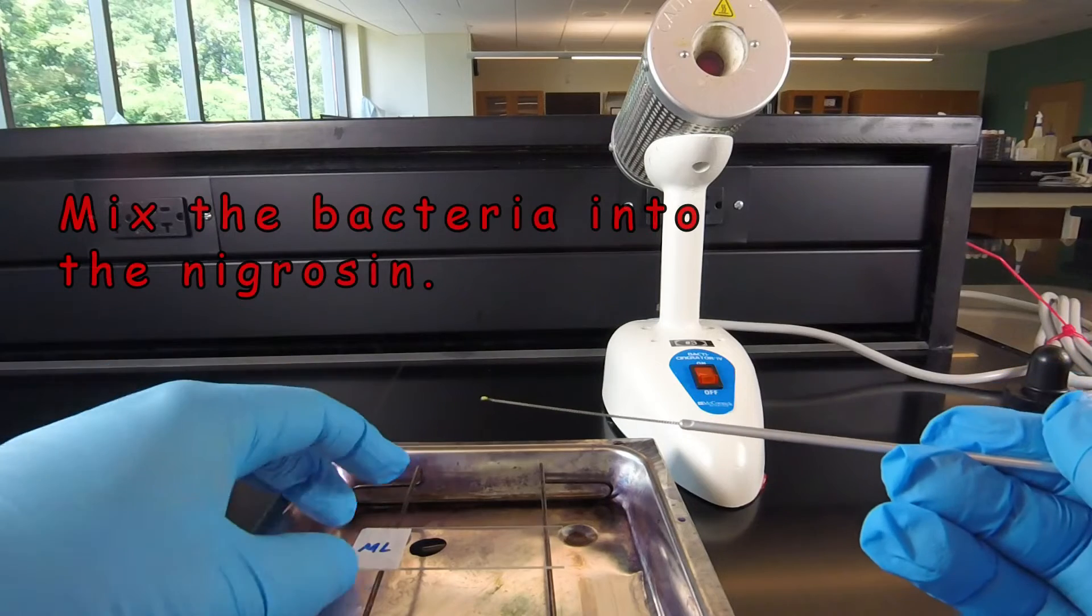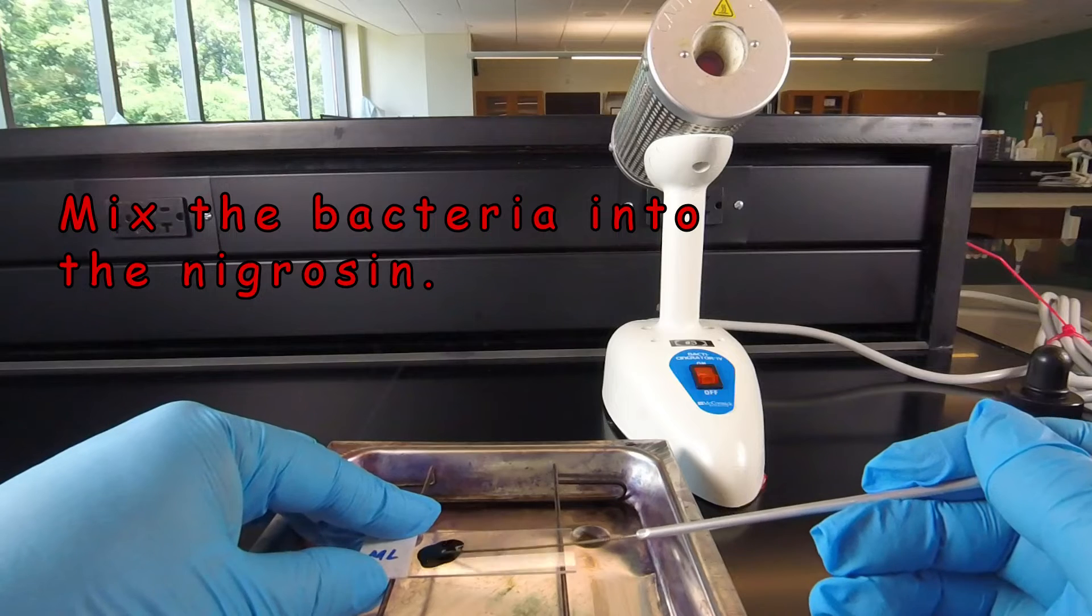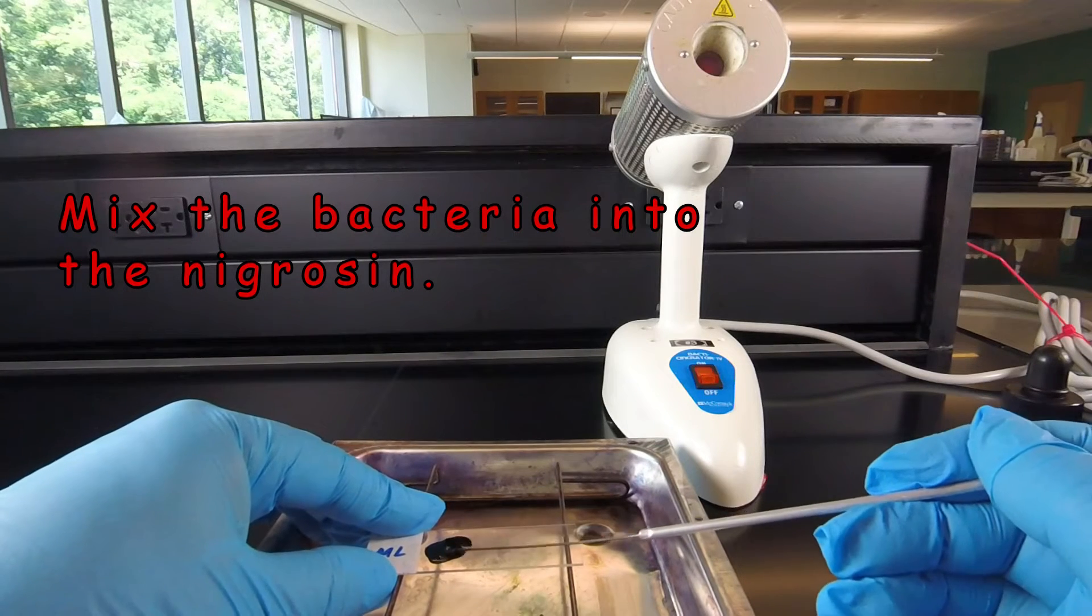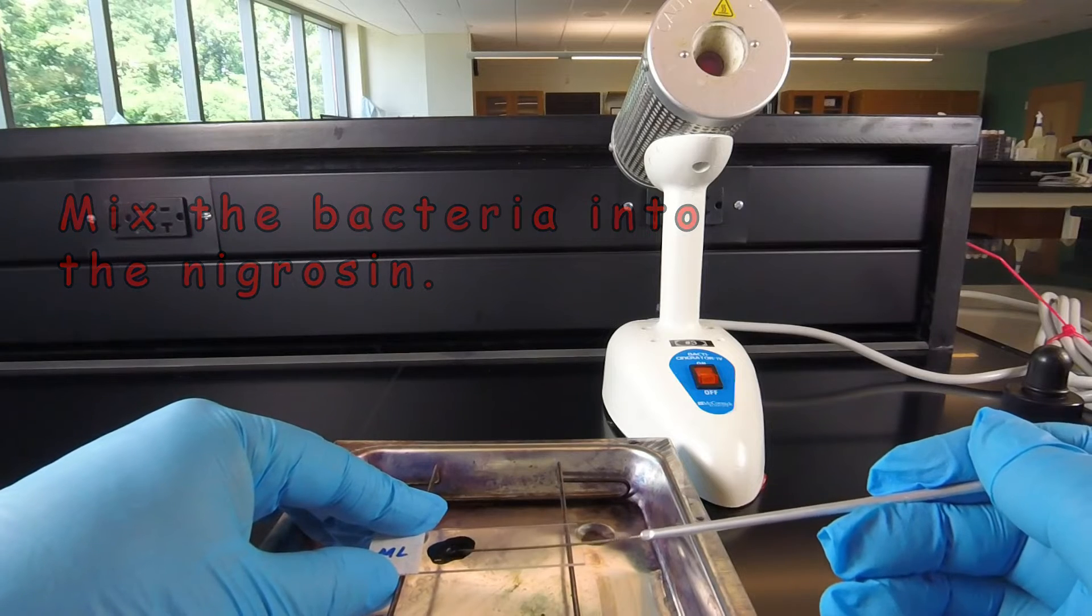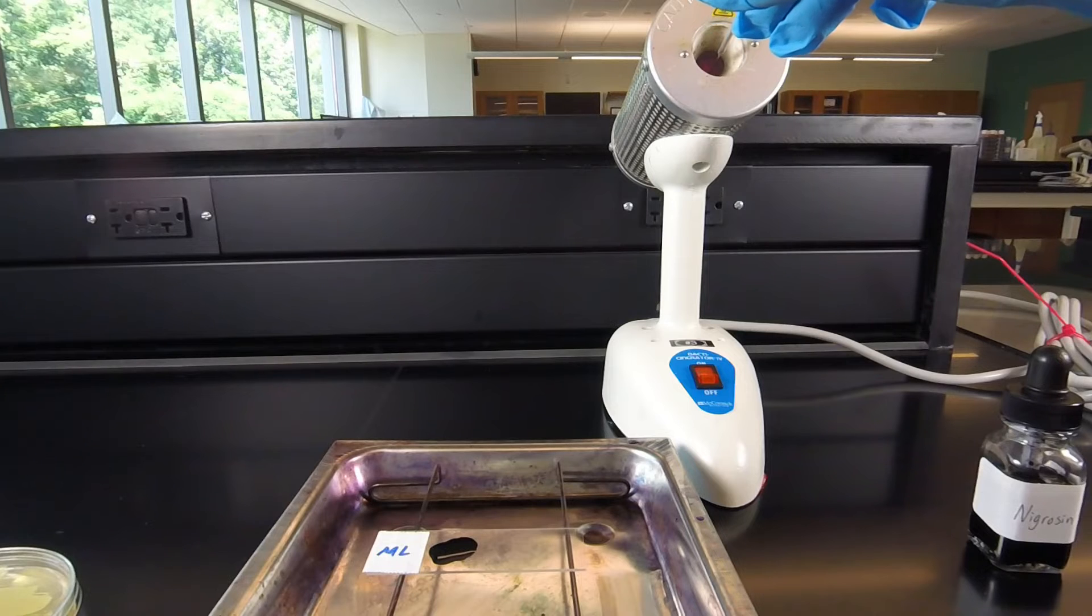Now on the indirect stain, we actually mix the bacteria with the dye itself, smearing it into the dye. Then we can sterilize the inoculating loop to get rid of any bacteria and dye that's on the loop.